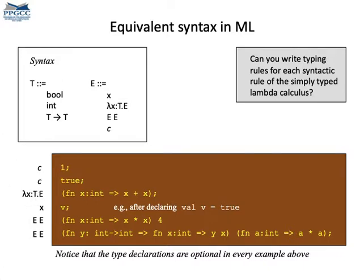We have variables, like x as example. And we have function applications, which we denote as the juxtaposition of two lambda expressions.